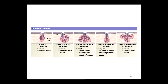Here are some examples of simple glands. The gray cells represent the ductwork. Since it is just a straight tube, it is simple. This one has a longer duct — see the gray cells on either side — but it's still just a straight tube, so it is simple.